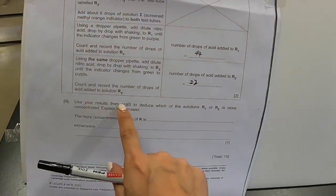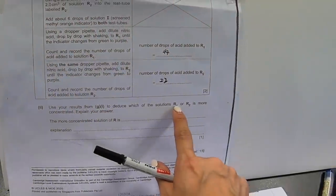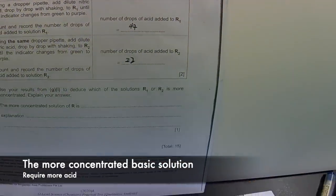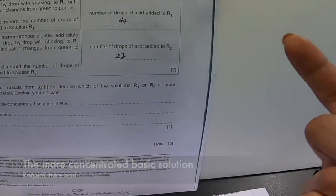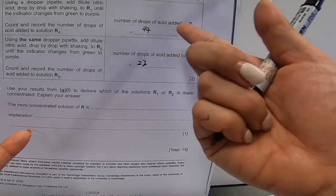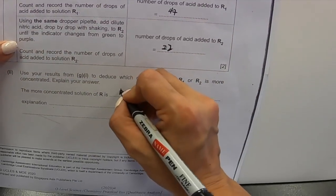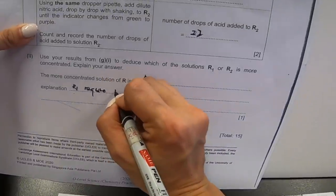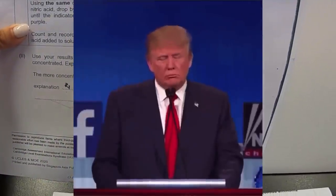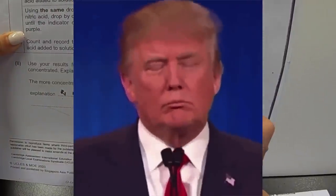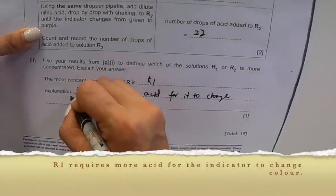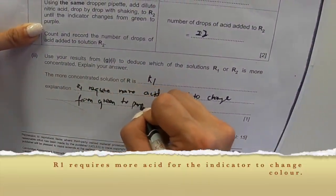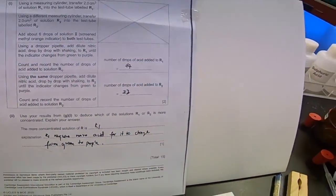Well, from over here, use your result from G1 to deduce which of the solution R1 or R2 is more concentrated. Well, as we can see over here, which one requires more acid to neutralize it? It's 47, the winner, which is R1 is the winner. So the more concentrated solution is R1. Why? Because R1 requires more acid for it to change from green to purple. Full stop. There you go. We finished the entire experiment.